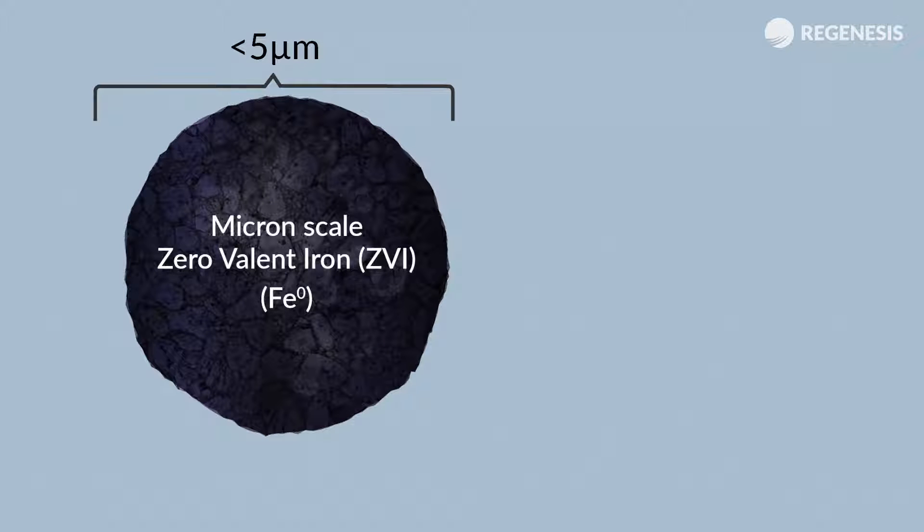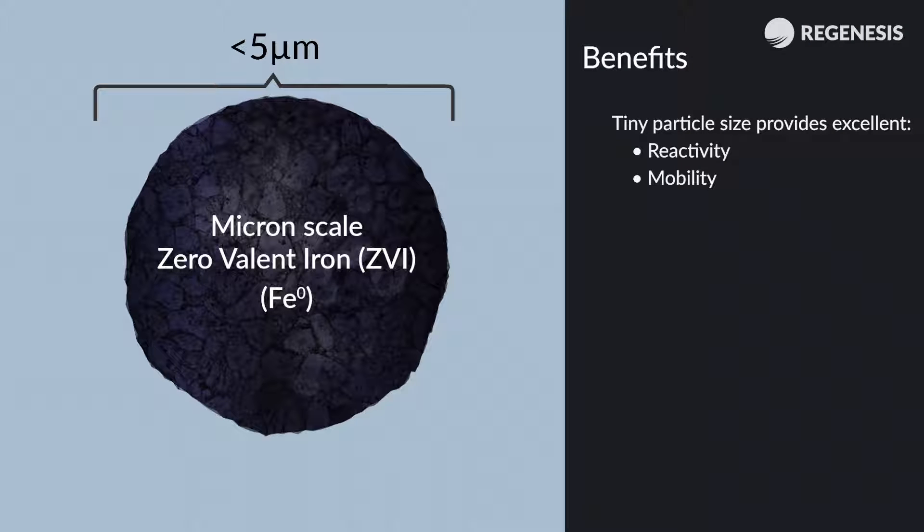S-Micro-ZVI contains particles of zero-valent iron that are less than 5 microns in diameter, providing excellent reactivity and distribution, coupled with powerful chemical reduction.